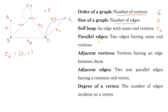Adjacent vertices are vertices that have an edge between them. For example, D and E — there is an edge between them, so D is adjacent to E. Similarly, D is adjacent to C, D is adjacent to B, B is adjacent to A, and B is adjacent to C — in this way you can define adjacent vertices.